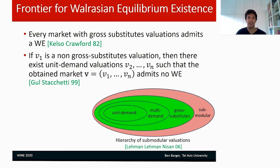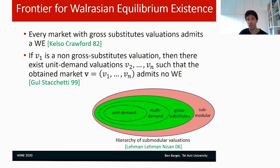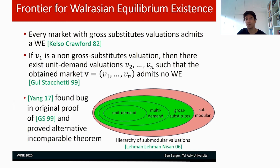Regarding the guaranteed existence of Walrasian equilibria: on the positive side, every market with gross substitutes valuations always admits a Walrasian equilibrium — the green area in the diagram. On the negative side, if V_1 is a valuation which is not gross substitutes, then there are unit demand valuations V_2 to V_N such that the market V_1 to V_N has no Walrasian equilibrium. This is the famous theorem by Gul-Stacchetti from 1999. For valuation classes containing unit demand, we know everything about guaranteed existence of Walrasian pricings. In 2017, Yang in a JET paper found a bug in the original proof and proved an alternative and incomparable theorem.